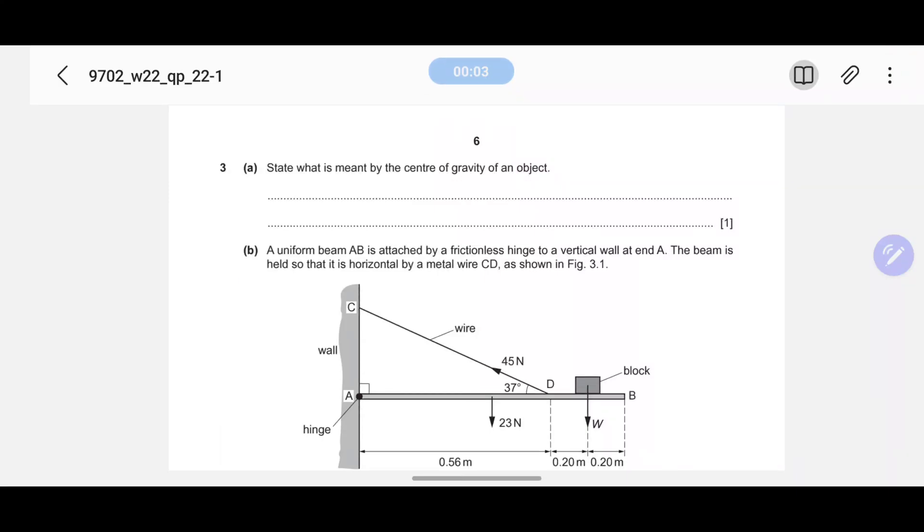Bismillah rahman rahim. Winter 22 paper, question paper 22, question number 3 part a: state what is meant by the center of gravity of an object. By center of gravity we mean that point where all the mass or all the weight of an object is acting.